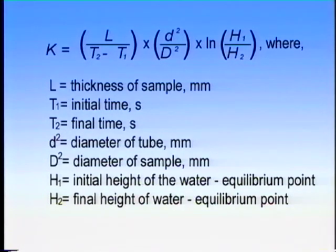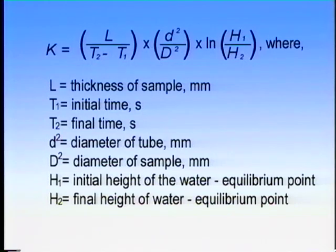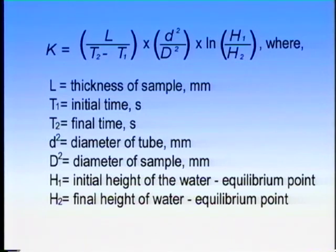The coefficient of permeability is the K value — the distance water will travel through the asphalt in a given amount of time. In the equation: L is the thickness of the sample in millimeters; T1 is the initial time; T2 is the final time; d-squared (lowercase) is the diameter of the tube in millimeters squared; D-squared (uppercase) is the diameter of the sample in millimeters squared; H1 is the initial height of the water equilibrium point; and H2 is the final height of the water equilibrium point.